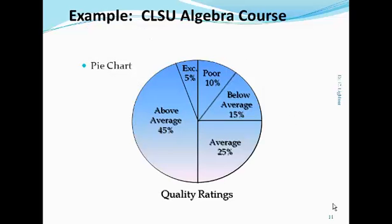For our example, the above average category consumes 45 degrees of the circle. As shown with the percent frequency, the excellent category consumes 5% of the circle.